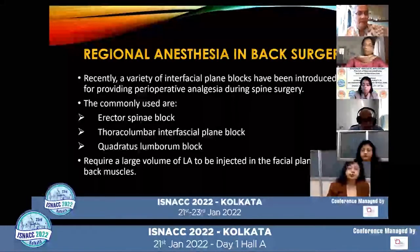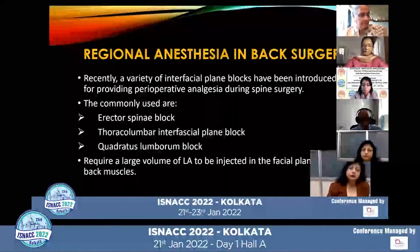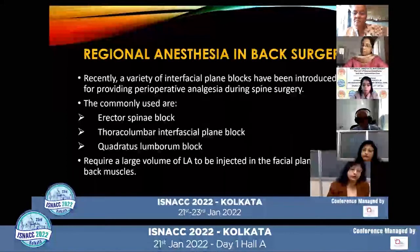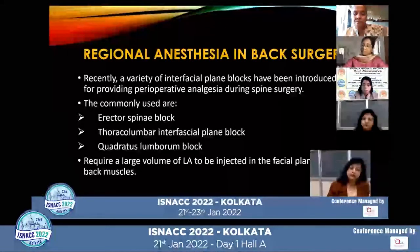The most commonly used are the erector spinae block, thoracolumbar interfacial plane blocks, and the quadratus lumborum block. All these blocks require a large volume of local anesthetic to be injected in the fascial plane of the back muscles. Therefore, it is important to discuss the anatomy of back muscles before going to these blocks.